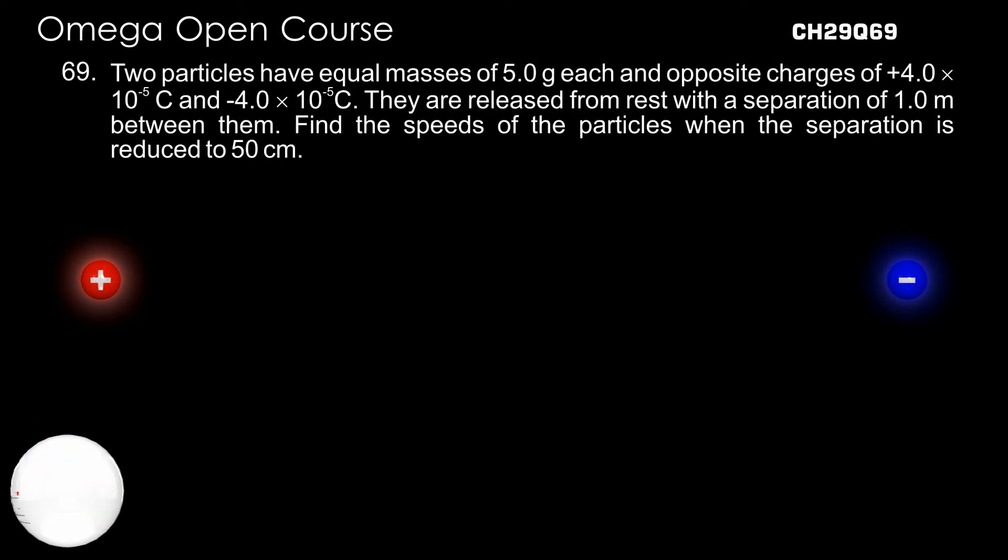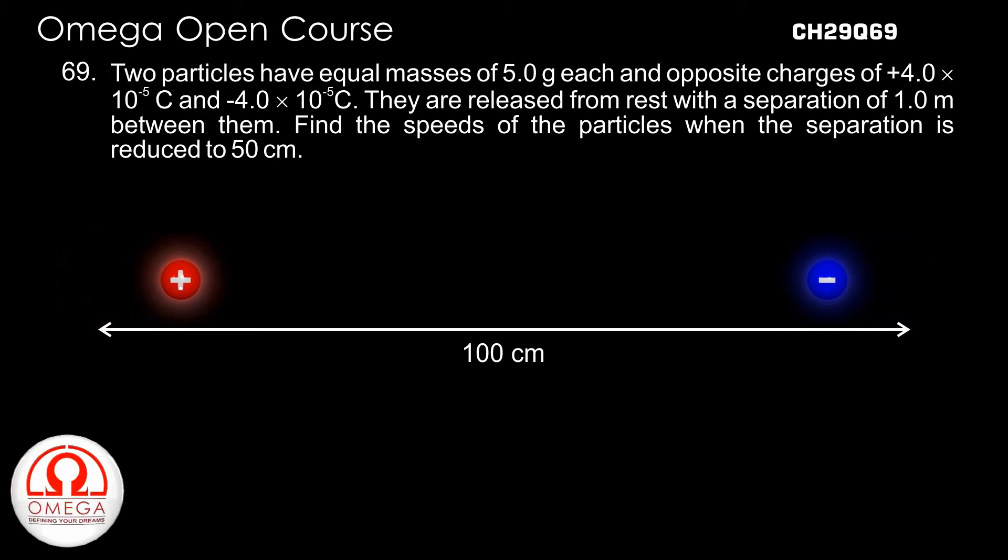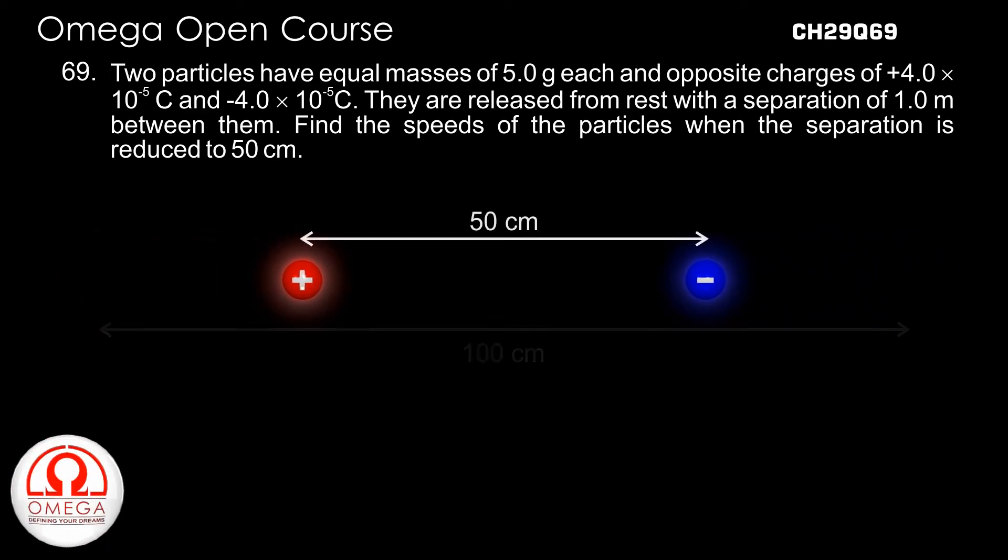Two particles have equal masses of 5 grams each and opposite charges of +4×10^-5 coulombs and -4×10^-5 coulombs. They are released from rest with a separation of 1 meter between them. Find the speed of the particles when the separation is reduced to 50 centimeters.